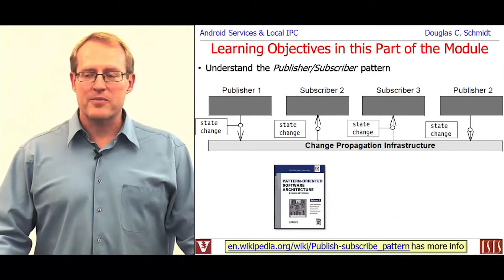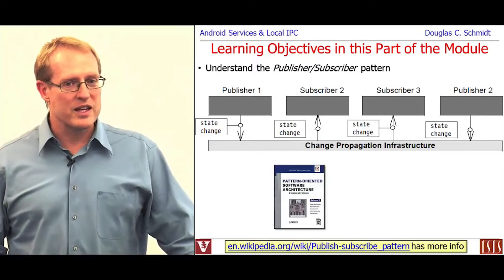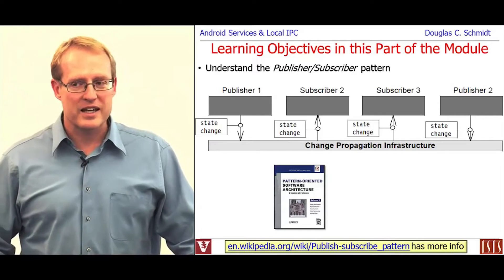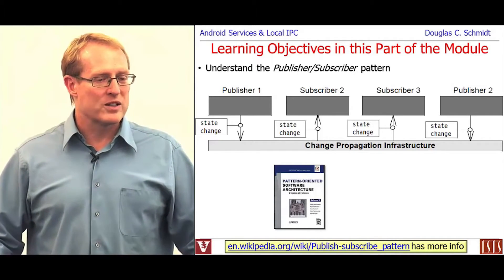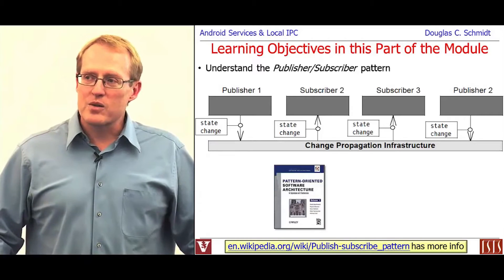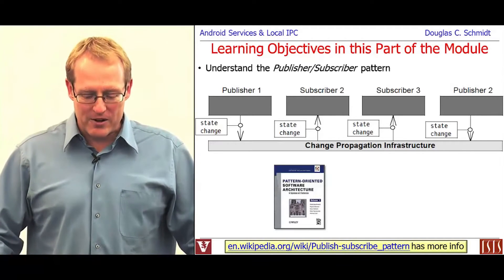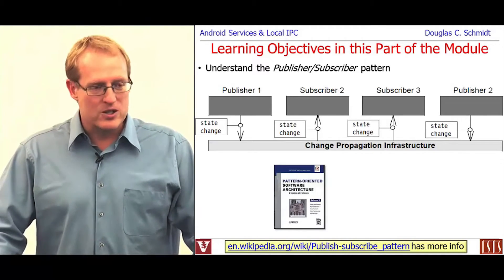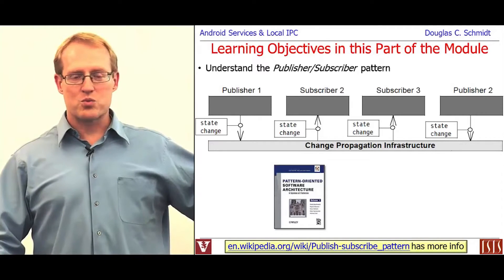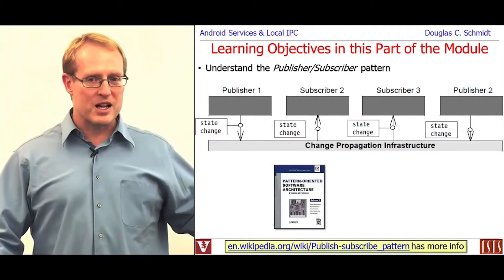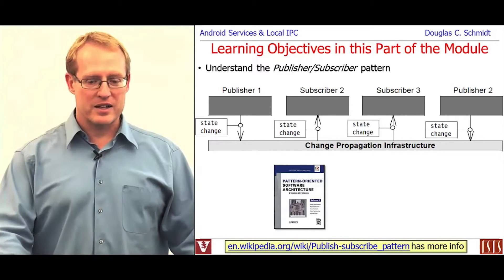The next thing I want to talk about will really be the last set of patterns on these topics. We're going to talk about something called the publisher-subscriber pattern, and we're going to describe first what the pattern is and how it works, what problems it solves, and then we're going to talk about how it's implemented in the context of Android.